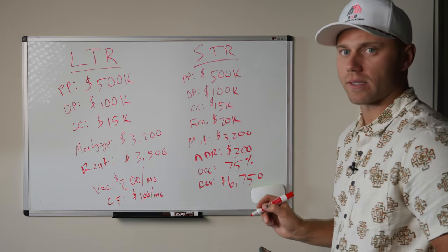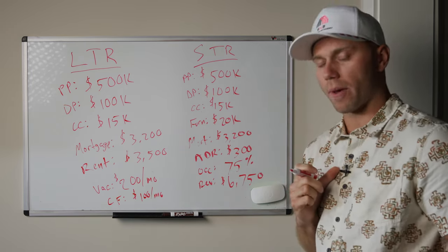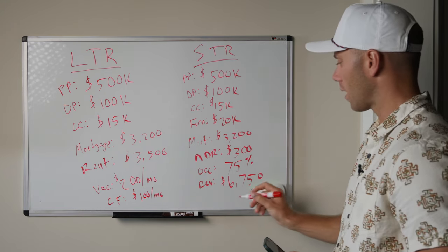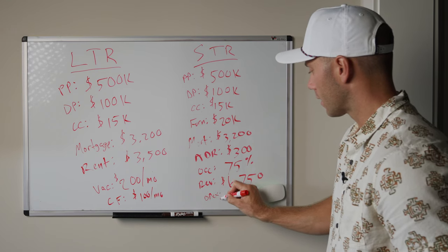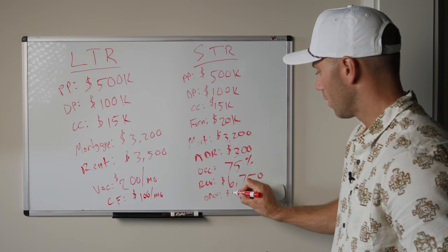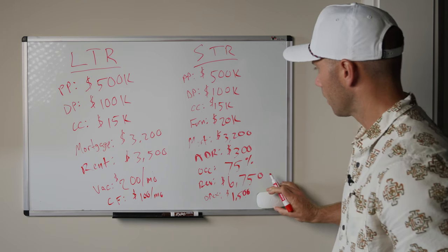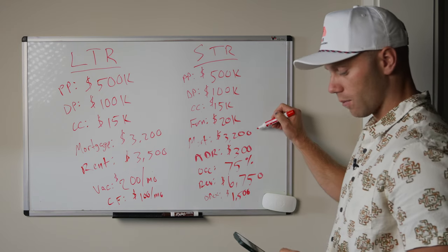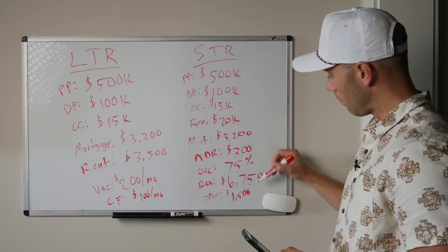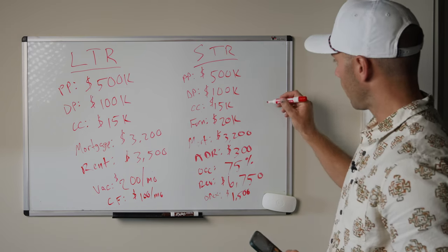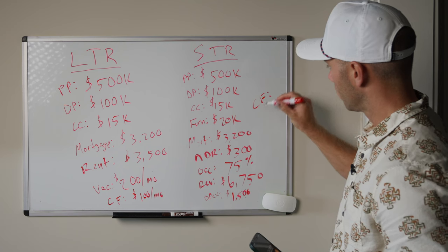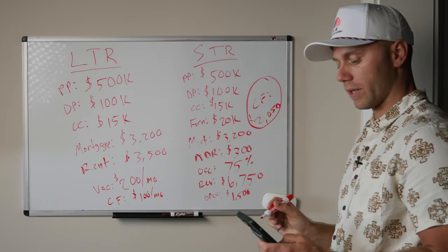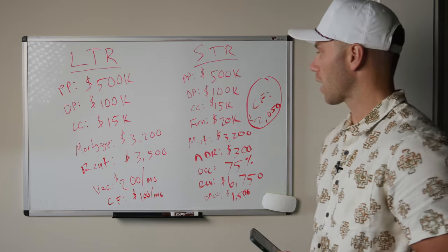We do have other expenses beyond just the mortgage — because as a short-term rental operator, we're paying for utility bills, cleaning fees, and such. Let's say OPEX is $1,500. So $6,750 minus the $3,200 mortgage minus $1,500 OPEX leaves us with a cash flow of $2,050 a month, which multiplied by 12 gives us $24,600 per year in cash flow.